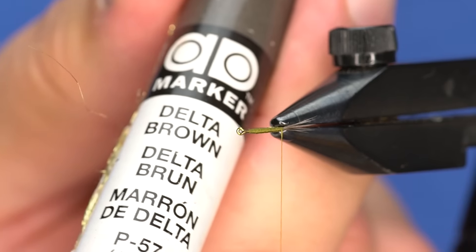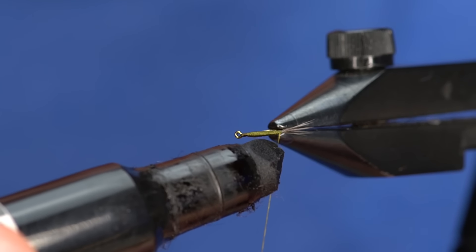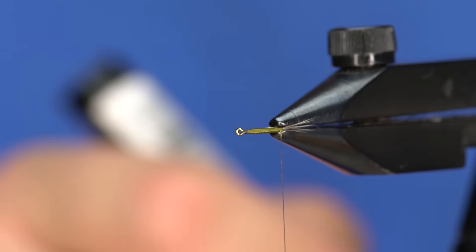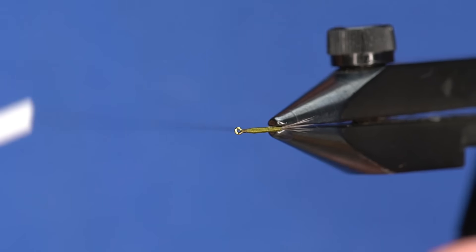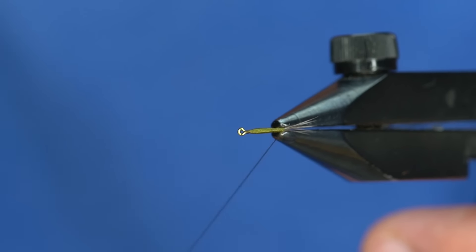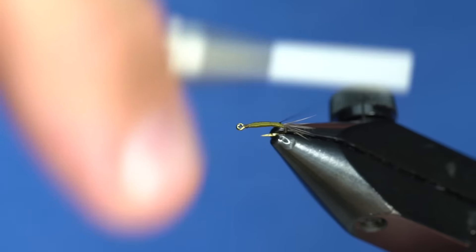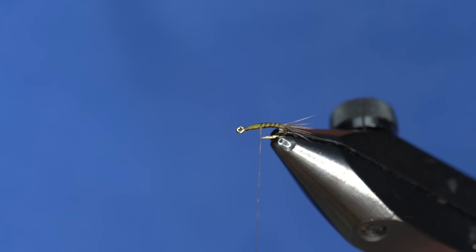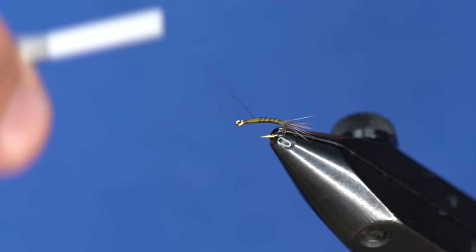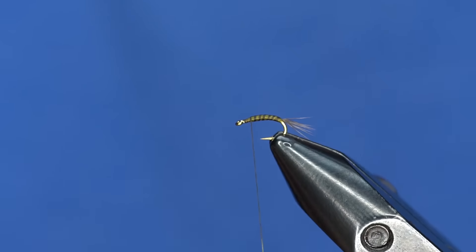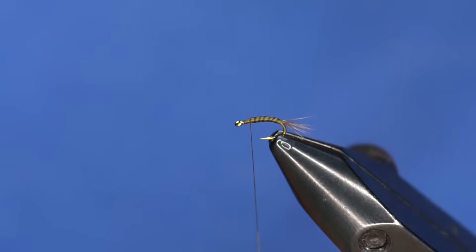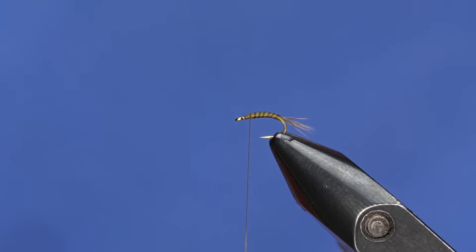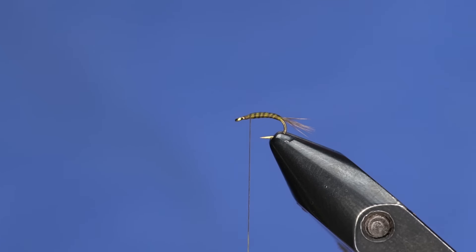We've got the Delta Brown Chartpak Marker. I'm just going to come in here and color about an inch and a half to two inches worth of the thread. Make sure that's nice and unwound. Then I'm just going to kind of barber poll that up, spacing out my wraps, all the way up the fly, about right to there. You can see that that makes a really subtle rib on the fly without adding another material. It's kind of a little fly hack there.